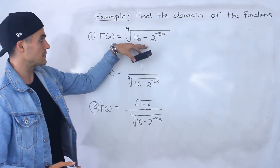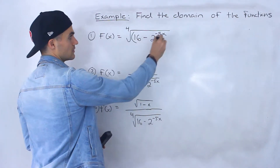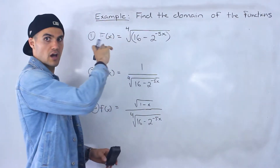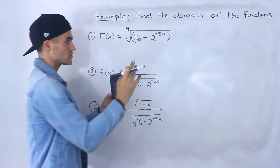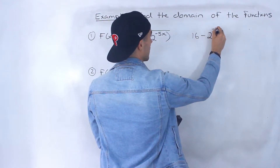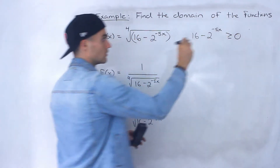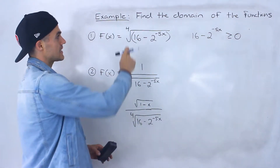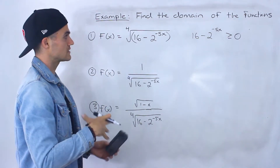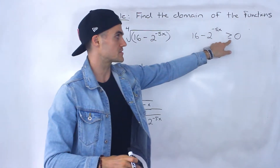Starting with function 1, notice we have the fourth root of an expression. Remember, whenever we have the even root of an expression, that expression — in this case 16 minus 2 to the power of negative 5x — has to be greater than or equal to zero, because you can't take the even root of a negative number. You can't take the fourth root of a negative number.